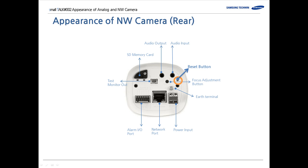We also have a reset button at the back — simply press it and the camera will be set to factory default. This small button is to adjust the focus automatically at the site. And, same as the analog camera, we have a lightning protective grounding port here.